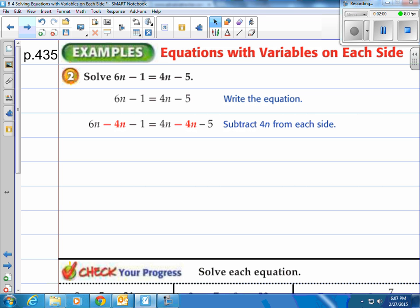Then we notice that 6n is larger than 4n. Since we're going to move the 4n over to the left, or subtract 4n from the right side, and also the left side. And when you do that, you're left with 2n on the left, and notice the n on the right side is now gone, there's no 4n anymore.